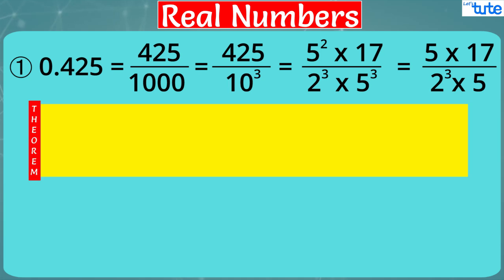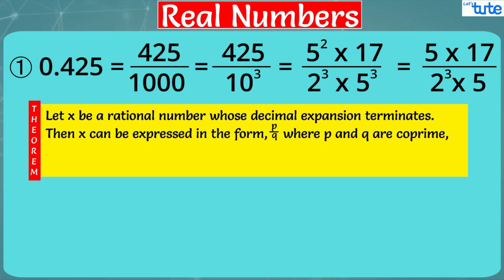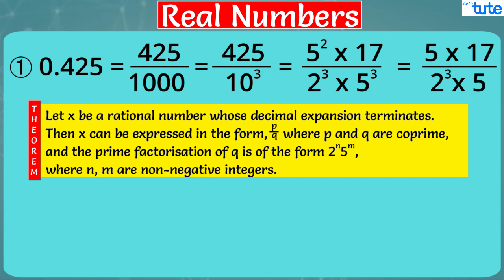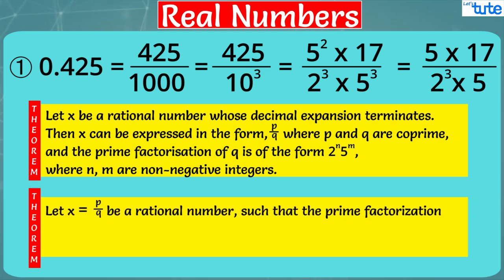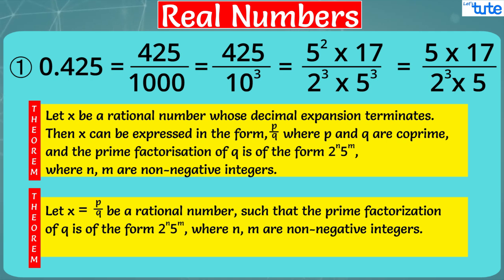And this is a theorem which states that let x be a rational number whose decimal expansion terminates. Then x can be expressed in the form of p by q, where p and q are coprime, and the prime factorization of q is in the form of 2^n × 5^m, where n, m are non-negative integers. The vice versa of this theorem is also true. Let x = p/q be a rational number such that the prime factorization of q is in the form of 2^n × 5^m, where n, m are non-negative integers. Then x has a decimal expansion which terminates.